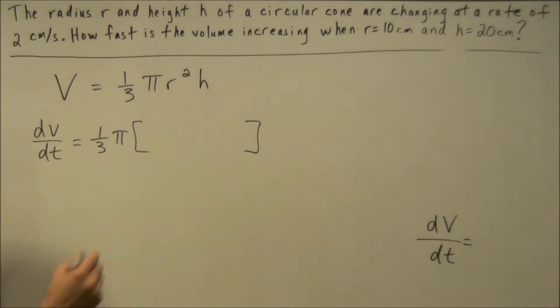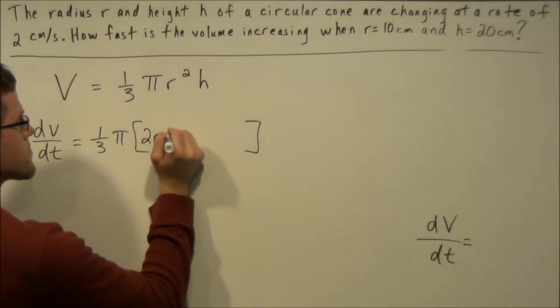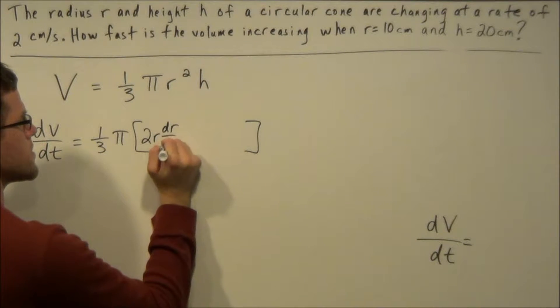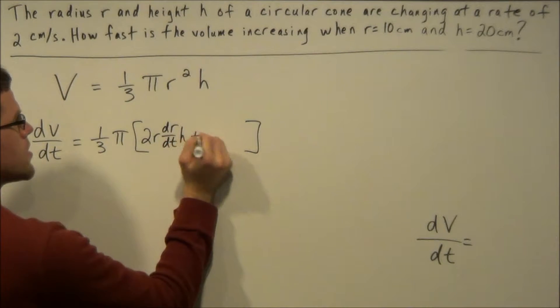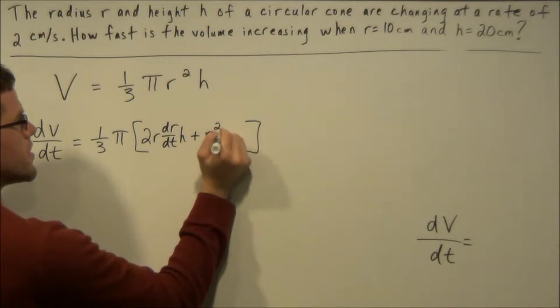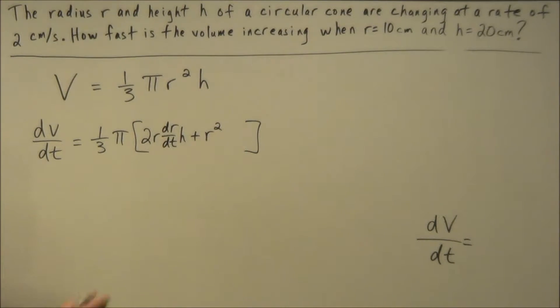The derivative of r squared is 2r dr/dt and we have times h plus r squared times the derivative of h is dh/dt.